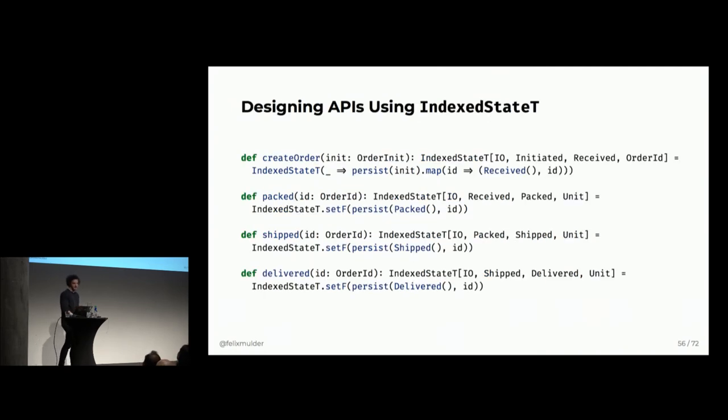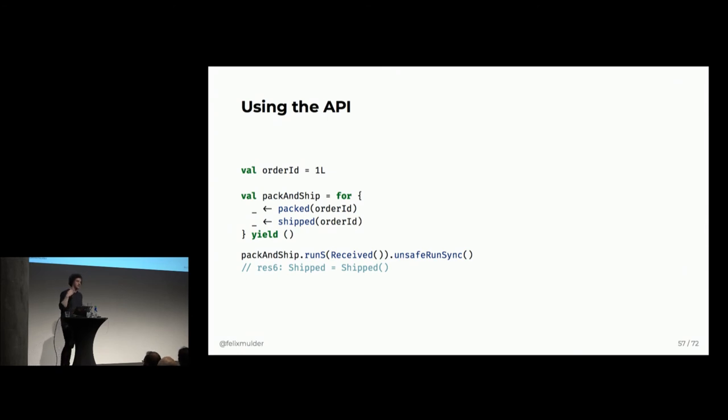We now create an API with some helper functions. We have something to create an order which gives us back an index state in the context of IO that takes the state from initiated to received and gives back an order ID. And then we have a package function which takes an order ID. It needs some reference in the database, right? And then it will persist that the order has now been packed. And then it will return unit because we really don't care about any result here. And then we do the same for shipped and delivered. So, now we can create a program for this and run it. So, here we are doing first packaging and then shipping. And then we simply run this with run s. That just gives you back the state without dealing with the value. And then we can do run on safe sync to get back the state. So, we can see that it properly works.